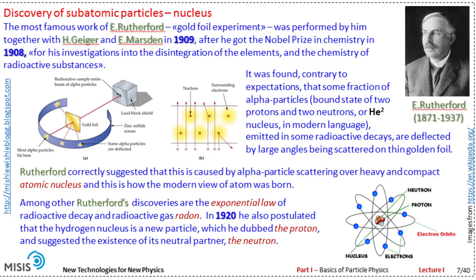Rutherford correctly suggested that this was because the particles scattered off some heavy and compact objects inside the atoms, which we now know as atomic nuclei. This was the first moment when the modern view of the atom was born — as an object consisting of a compact, heavy center surrounded by a large electron cloud. Another important discovery by Rutherford was the exponential law of radioactive decay, typical not only for particles but also for other atomic systems. In 1920, Rutherford postulated the existence of the proton — the hydrogen nucleus — and the existence of its neutral partner, the neutron.